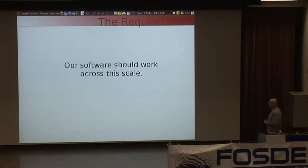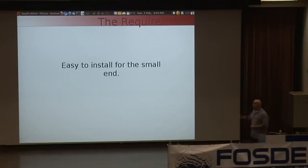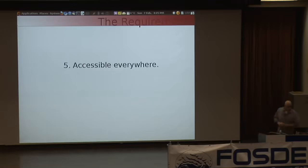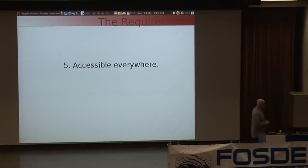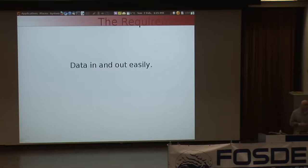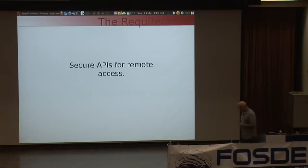Our software has to work across this entire scale. It has to be easy to install on the small end — an individual should be able to set up and use our software — but there should be a clear upgrade path as groups grow or shrink. Finally, any important software has to follow the developing trend of being accessible anywhere: via mobile device, desktop device, or other websites. People have gotten used to getting their data in and out easily, so we need secure APIs built into the software that provide remote access.